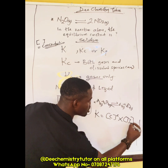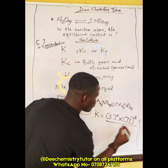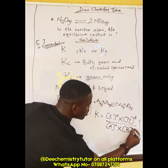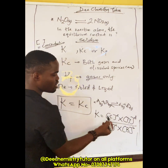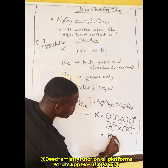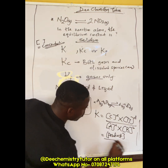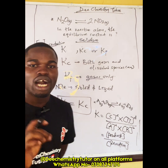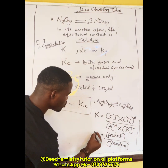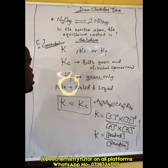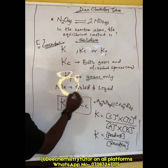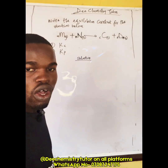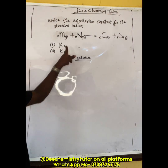This is divided by the concentration of A raised to the power a, multiplied by the concentration of B raised to the power b. In other words, K equals the concentration of the products over the concentration of the reactants. This is proven by the law of mass action.